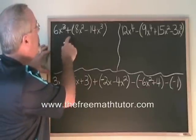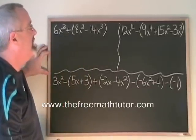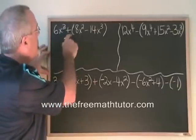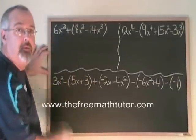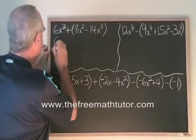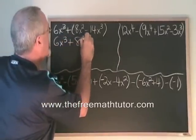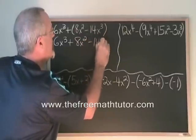Here we have 6x cubed plus and we have a bracket. Inside the bracket, 8x squared minus 14x cubed. Because there's a plus sign before the bracket, we can remove the bracket and nothing much changes at all. We have plus 8x squared minus 14x cubed.